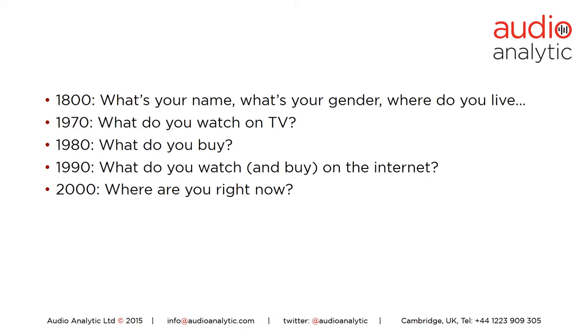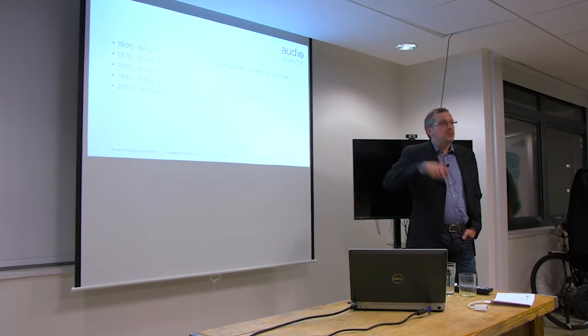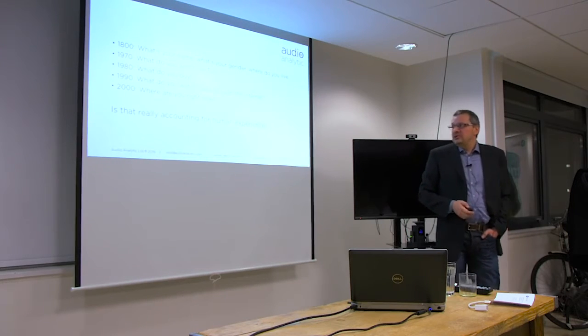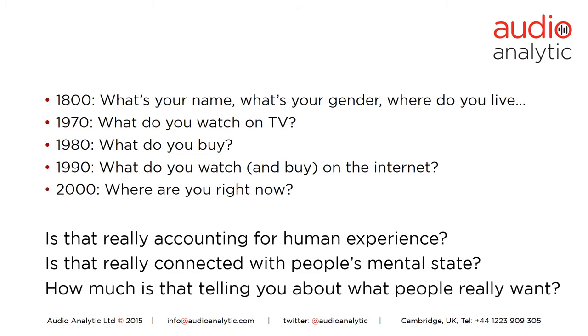Around 2007 we had the rise of smartphones. Walking through that history: early questions were what's your name, gender, where do you live? Then 1970 — what do you watch on TV? 1980 — what do you buy? 1990 — what do you watch and buy on the internet? 2000 — where are you right now, instant geolocation. But the question is: is that really enough? Is that really accounting for human experience? How much is that telling you about what people really want?